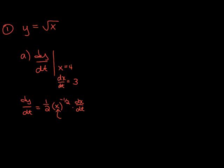From here we can just plug in the values that they gave us. So dy/dt equals 1/2 times x is 4 to the negative 1/2 and then dx/dt is 3. You're going to do exactly the same thing for part B, just plugging in different numbers.